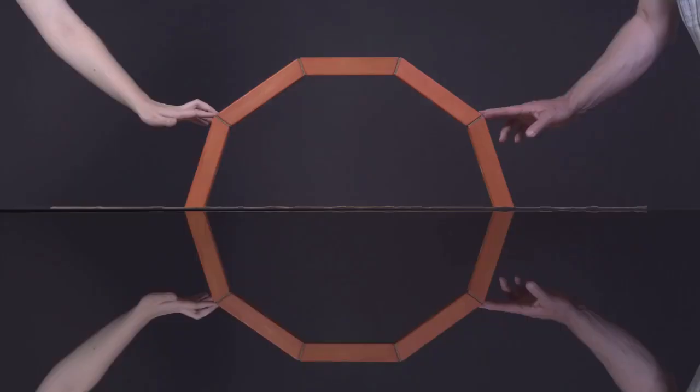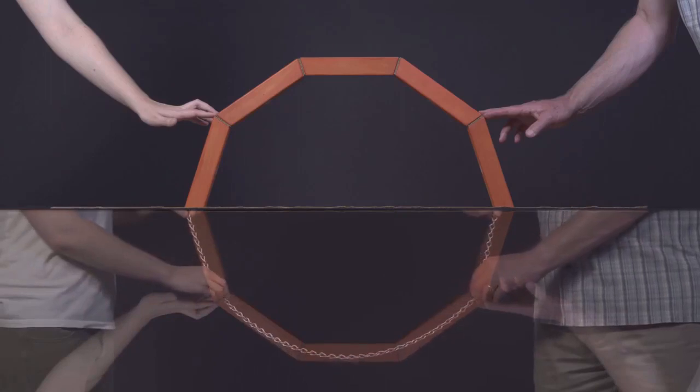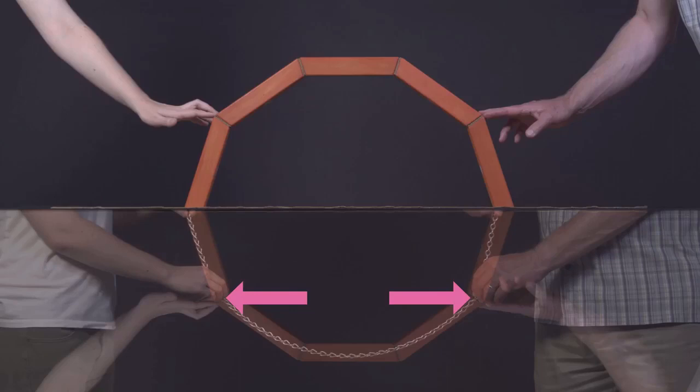Suppose, instead, that we added forces to the chain to make it follow the shape of the semicircular arch. As you can see, outwards forces applied at these points on the chain would do the job. They'd change the catenary shape into something more like a semicircle.